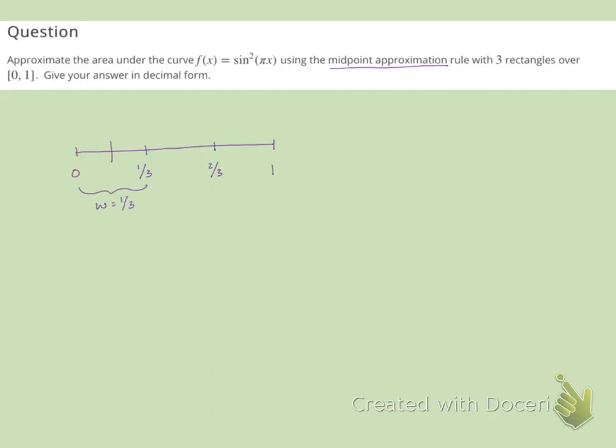So if I do the midpoint between zero and 1/3, I get 1/6. And then the midpoint between 1/3 and 2/3 is 1/2. The reason I got that so fast is because I know everything's evenly spaced, and I'm counting by 1/6.